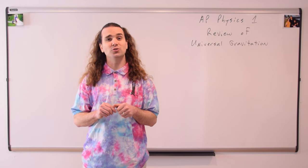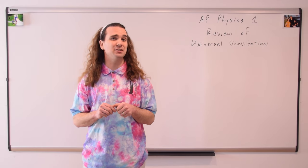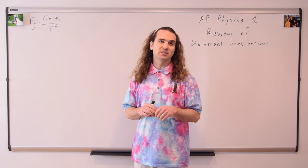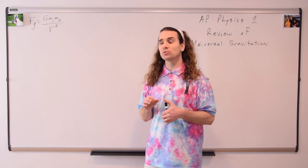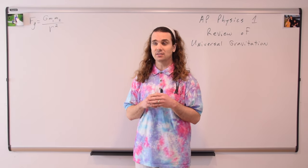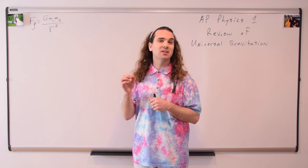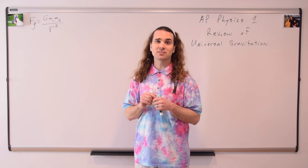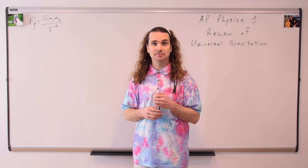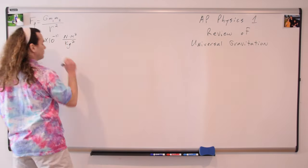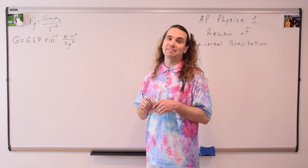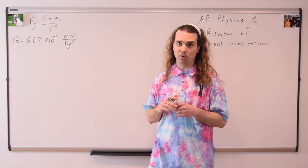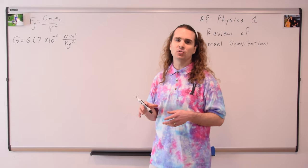Let's start with Newton's universal law of gravitation, which I like to call the big G equation. The force of gravity that exists between any two objects is equal to big G — the universal gravitational constant — times the mass of one object times the mass of the other object, divided by r squared. Big G is 6.67 times 10 to the negative 11 newtons times meters squared divided by kilograms squared. And m is the mass of the two objects in kilograms.